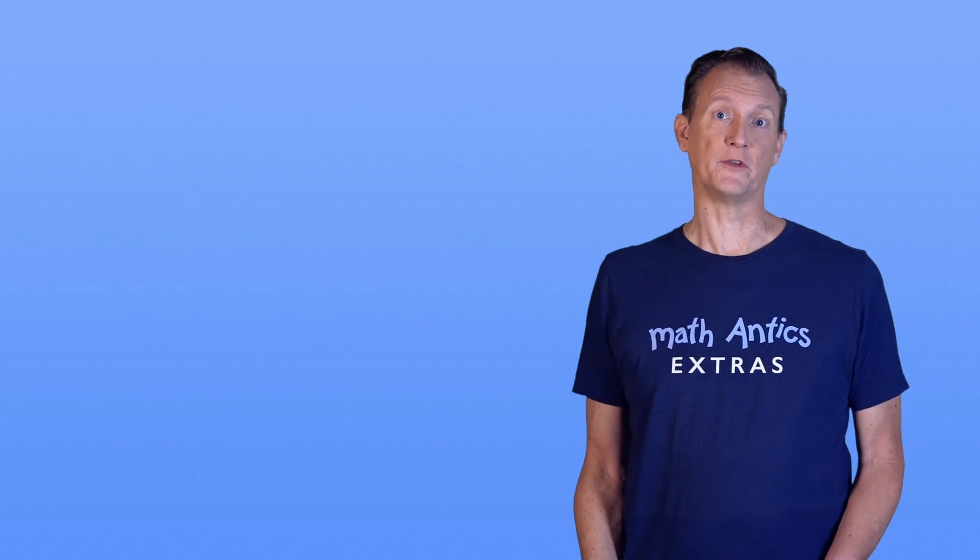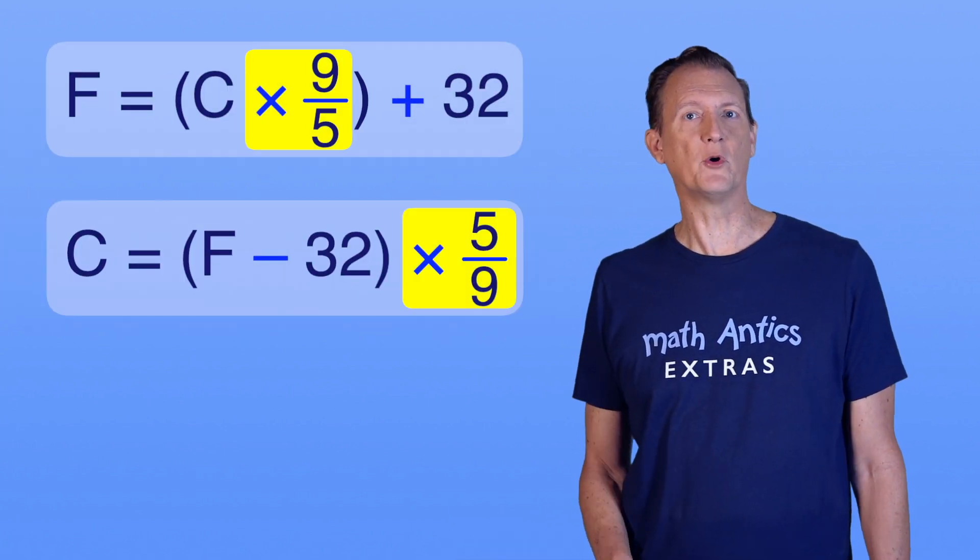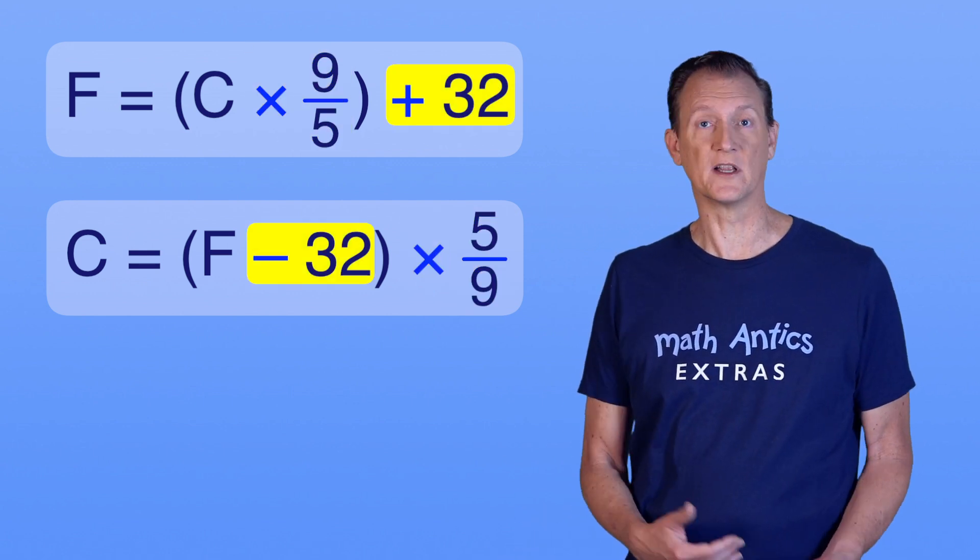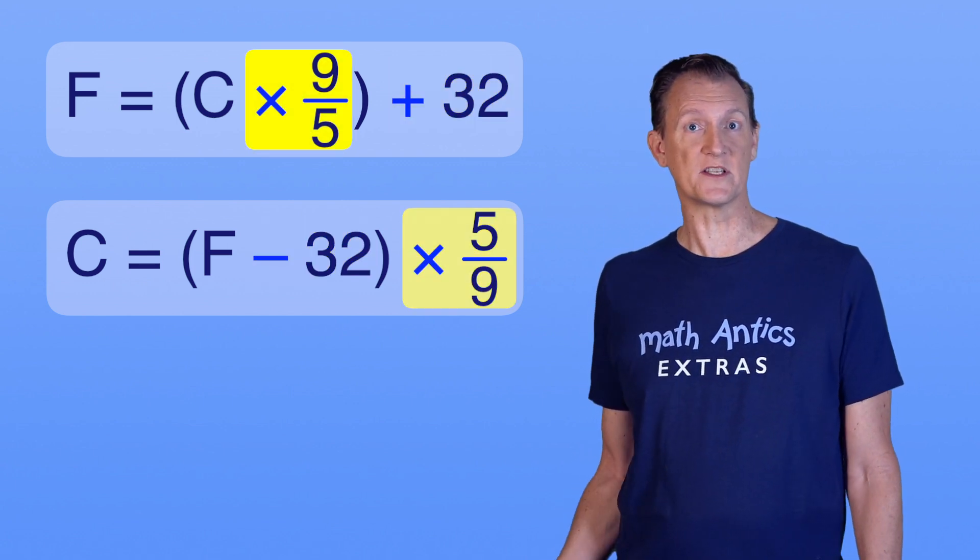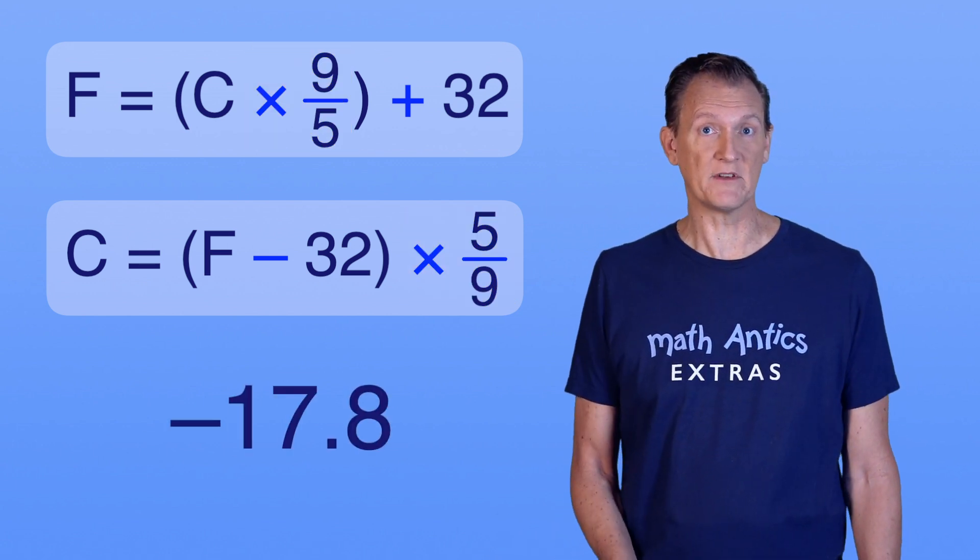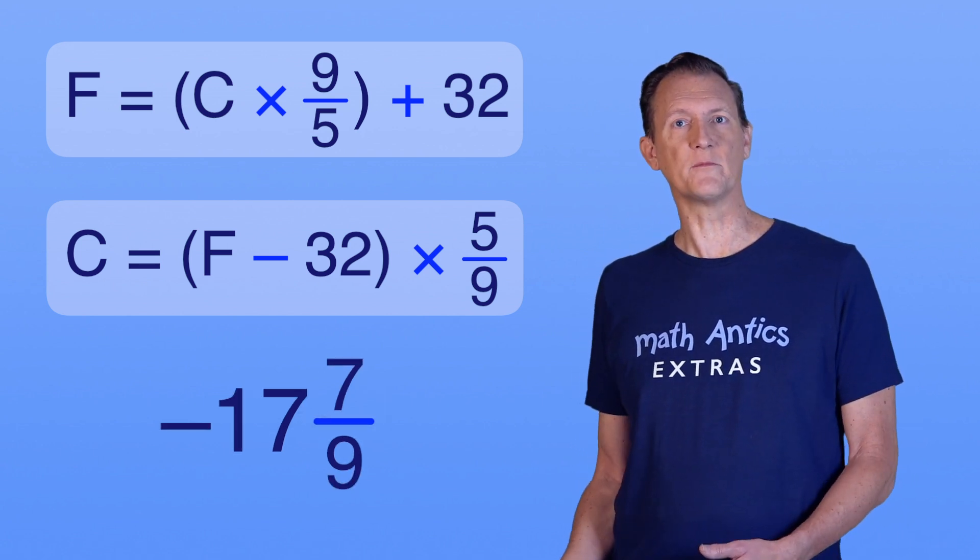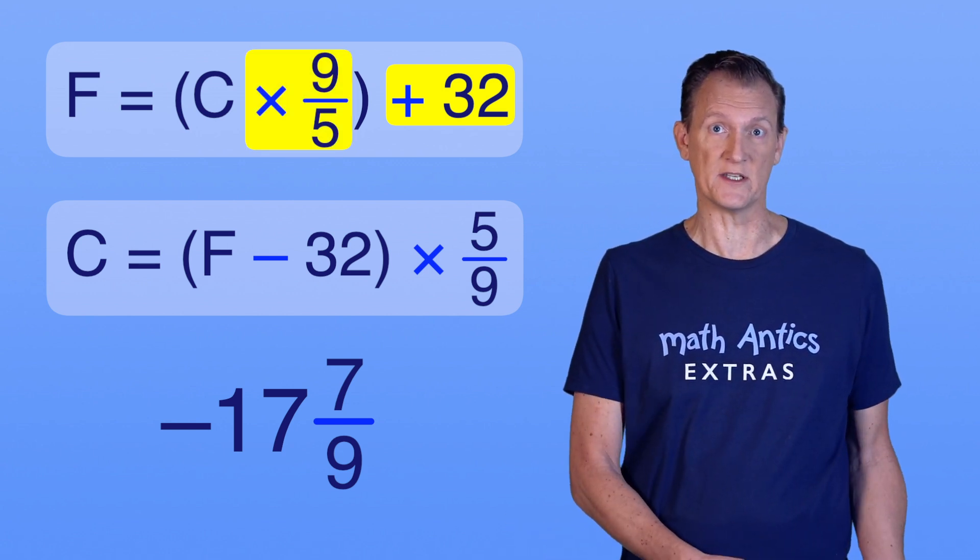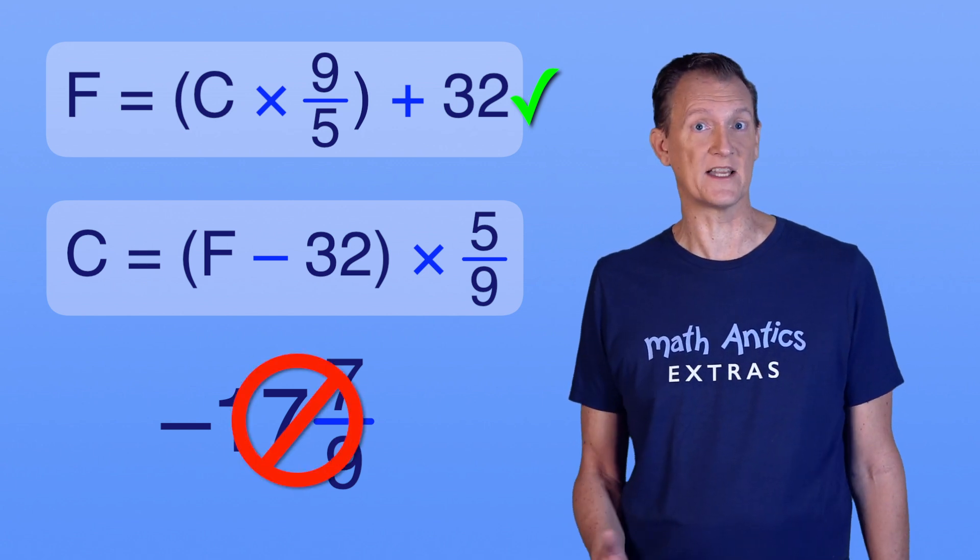For converting temperatures, it's very helpful to memorize these procedures. Here they are side by side so you can compare them. They both have a multiplication step to change the size of the degrees and one adds 32 and the other subtracts 32 to line up the zero points. But why does one procedure do the multiplication first and the other does it second? Well, remember how 0 degrees Fahrenheit is about negative 17.8 degrees Celsius? The exact value is negative 17 and 7 ninths. When converting from Celsius to Fahrenheit, we want to shift our zero points after we change the size of the degrees, so we can shift by a whole number, like 32, instead of shifting by a mixed number, like 17 and 7 ninths.